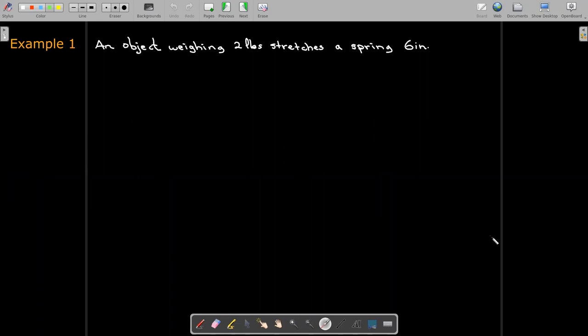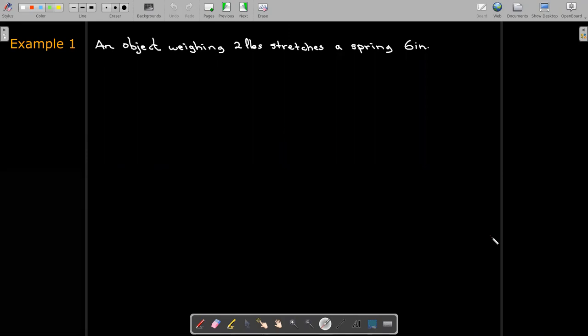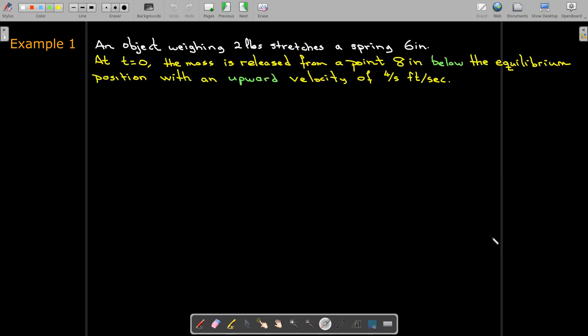All right, so let's look at an example. We'll take the example one step at a time. So we have an object, it weighs two pounds, and it stretches a spring six inches. So that should be enough to use Hooke's law to determine the spring constant. At t equals zero, the mass is released from a point eight inches below the equilibrium position with an upward velocity of four fifths feet per second. So now we have our initial conditions, and we're being asked to determine the equation of motion.